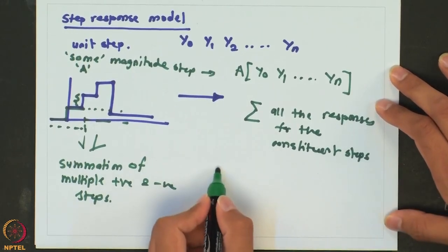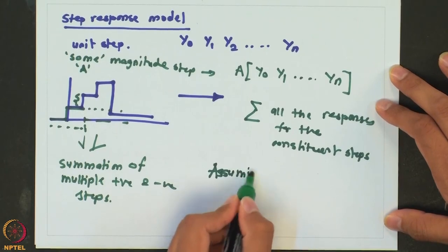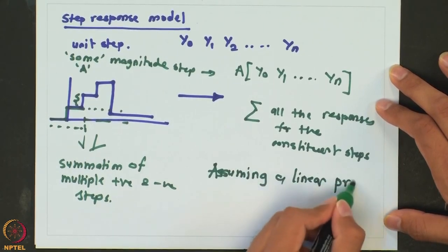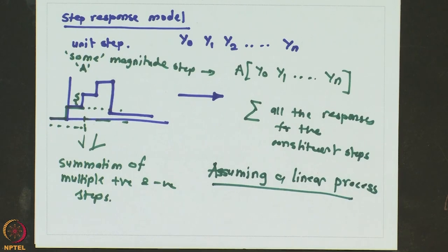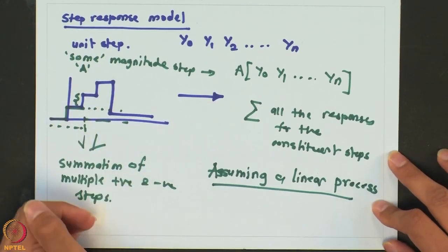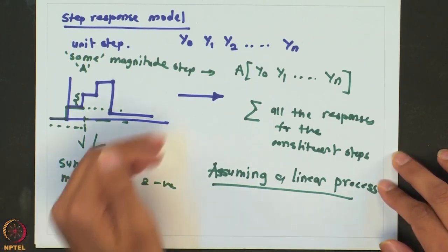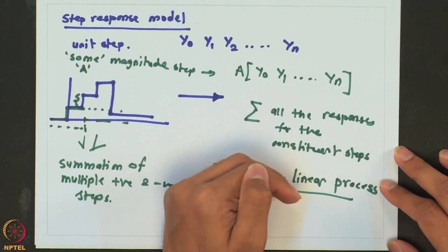This approach is valid assuming a linear process. If you assume a process is linear, any input can be written as a summation of multiple positive and negative steps and the response can simply be scaled and added together. Empirical models can also be as complicated as an artificial neural network, but from a control point of view, regression models or step response models are the most commonly used empirical models.